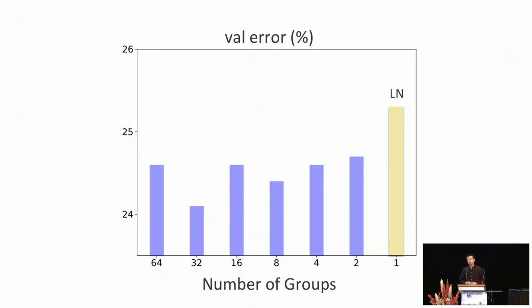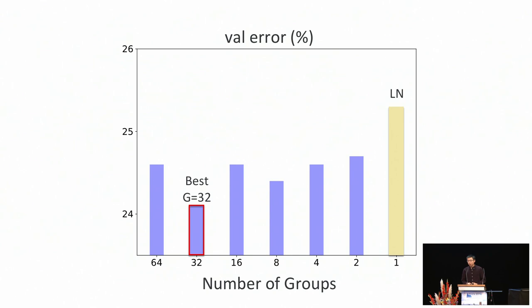Group norm becomes layer norm when there is only one group, but we can explore other numbers of groups. Here we plot the final error rate with different numbers of groups in group norm, using the same number of groups for all group norm layers in the model. Layer norm already has very good performance — in fact, it's not widely known that layer norm can perform reasonably well on ImageNet. However, any group norm model has better performance than layer norm, even with only two groups. This suggests the idea of feature grouping is effective. We empirically found that using 32 groups gave the best results, so we used this hyperparameter for all other experiments.